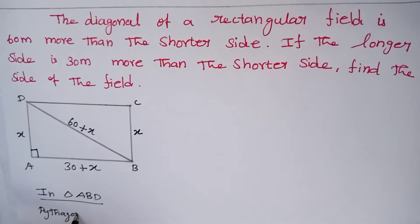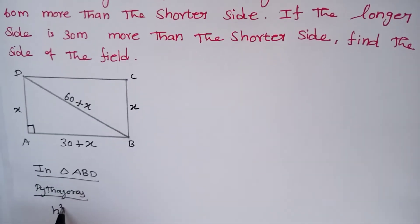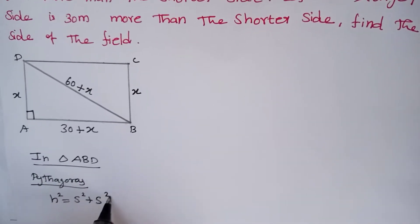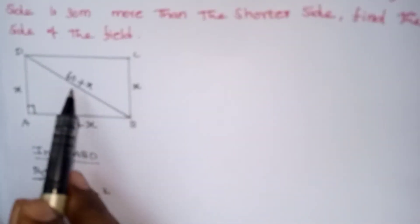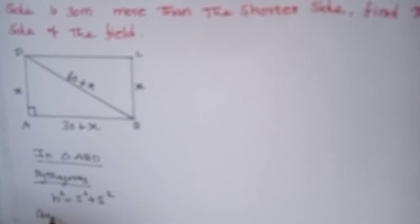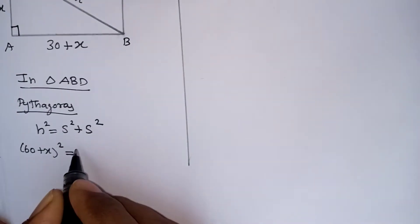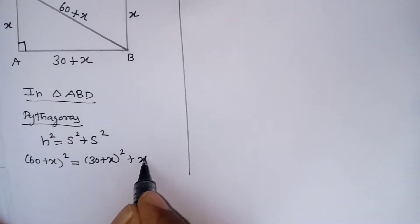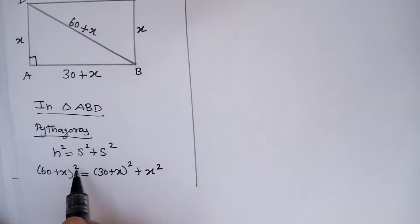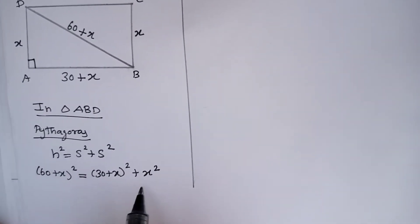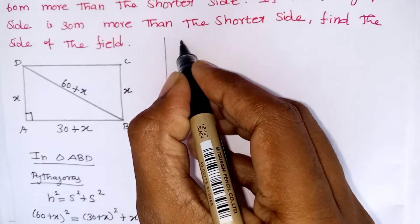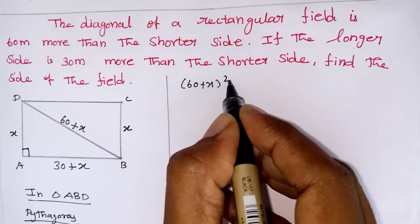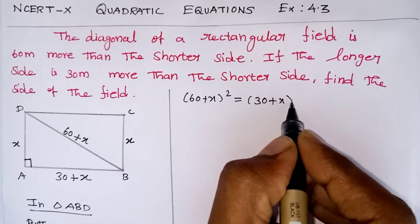We know that the hypotenuse squared is equal to side squared plus side squared. Here, the hypotenuse in this diagram is 60 plus x. So we can write: (60 + x)² = (30 + x)² + x².